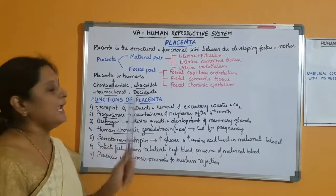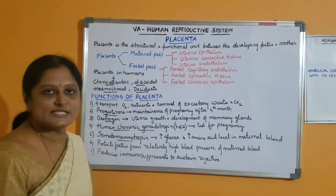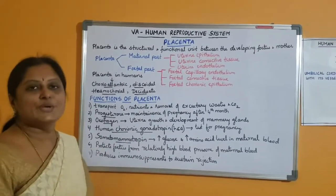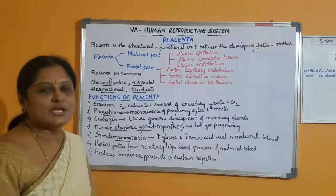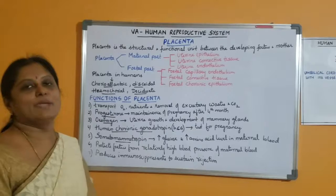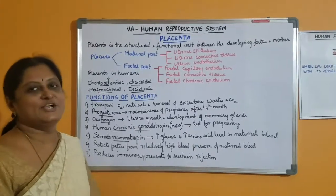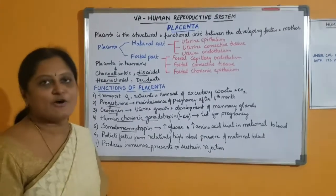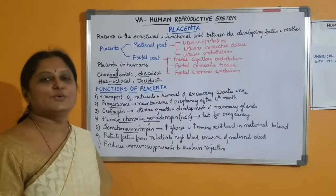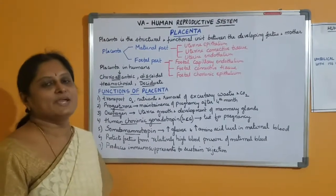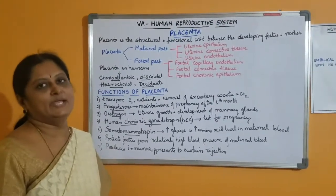The placenta is called decidiate because during parturition, along with the baby, the placenta and decidua are shed off, leading to excessive hemorrhage and bleeding.